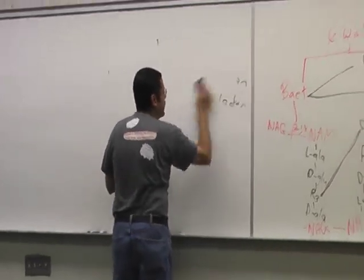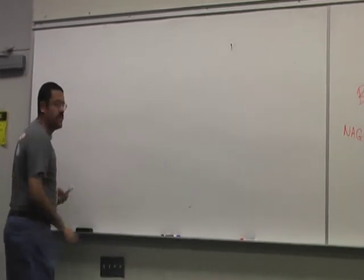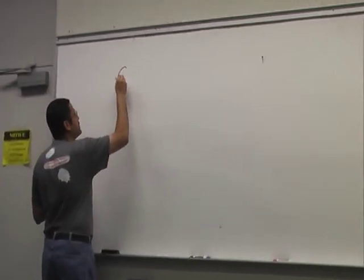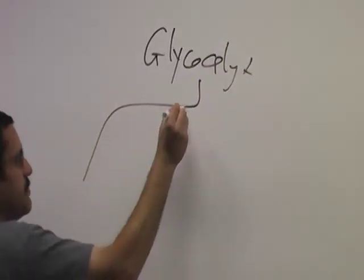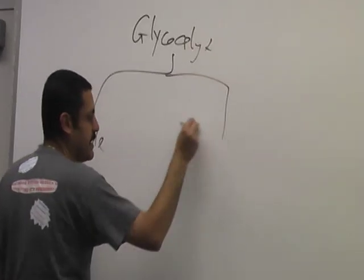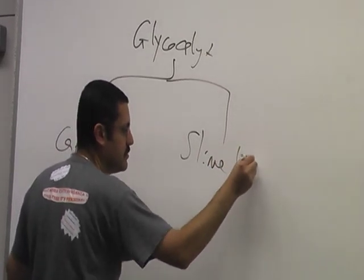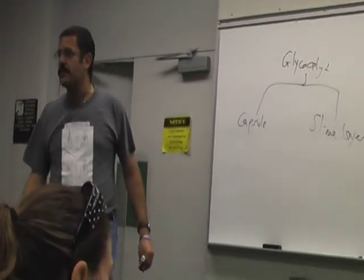Next, who's the capsule? Remember, the capsule falls under the big heading glycocalyx. So the glycocalyx can be two types. It can be the capsule proper or it could be a slime layer. Proteins, polysaccharides, combination.